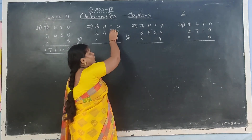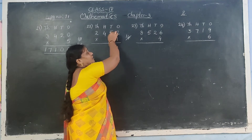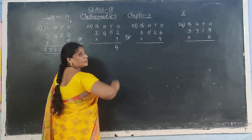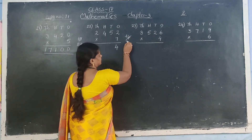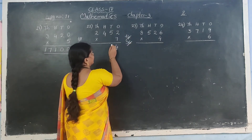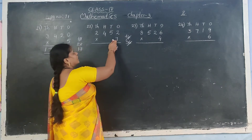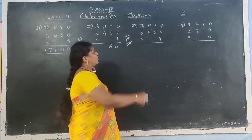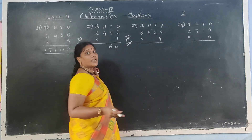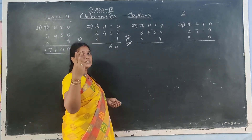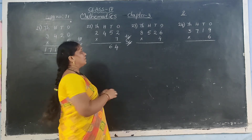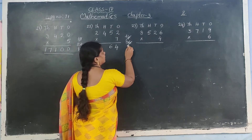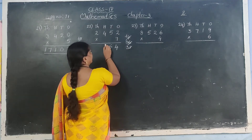Next step: read up to 5. 7 fives are 35. Carry number is there: 35 plus 1 is 36. Write 6 in answer, carry 3. Again: 7 fours are 28. Carry number: 28 plus 3 is 31. Write 1 in answer, carry 3.